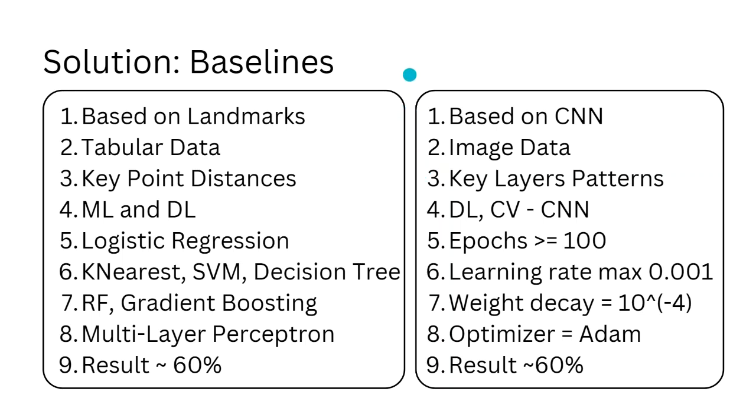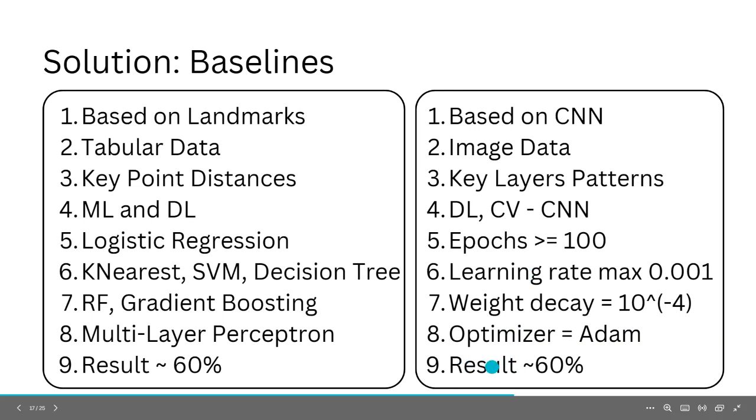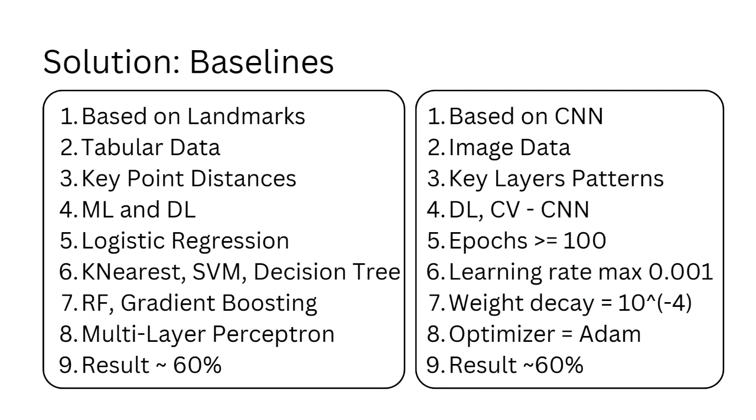So what are our solutions? Our solution is split into two. First is based on CNN and another one is based on landmarks. So first I want to talk about CNN. We take our dataset, we try to do augmentation, feed our images to the CNN model. It's based on deep learning and computer vision. We do about more than 100 epochs. Our learning rate max is about 0.001. And here are just the hyperparameters or parameters that we used for our CNN. And most importantly, our result was about 60% accuracy on test data.